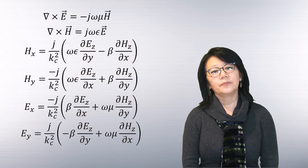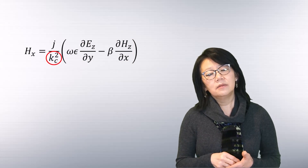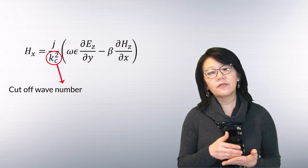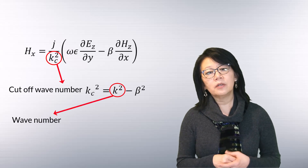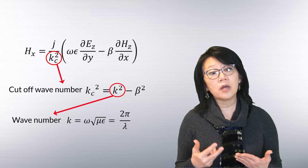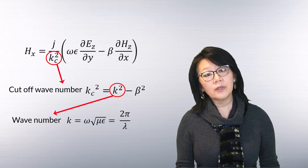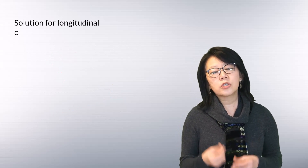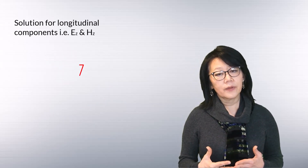Here kc is the cutoff wave number. k is the wave number in the medium or dielectric and is given by omega times the square root of mu times epsilon, or two times pi divided by lambda. First let's find a solution for the longitudinal components of the fields, and then we'll go on to the transverse components derived from the longitudinal components.